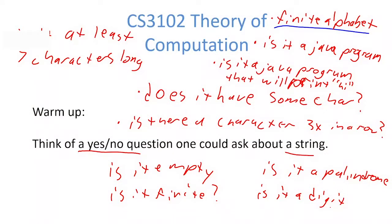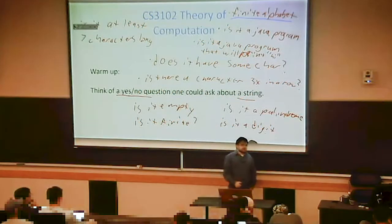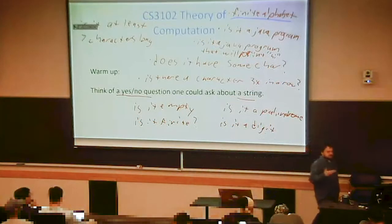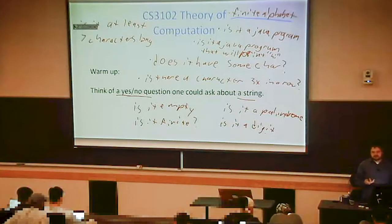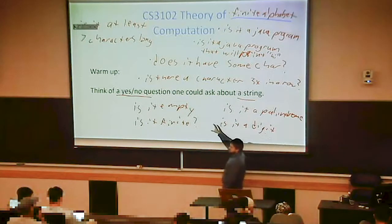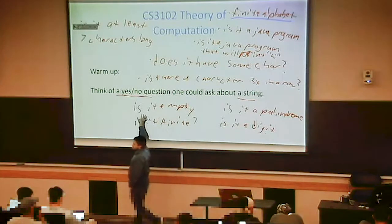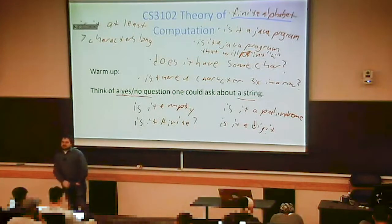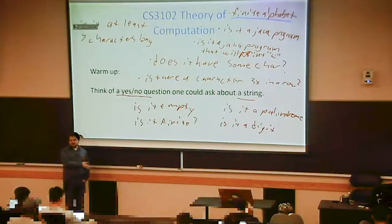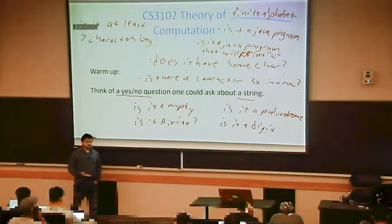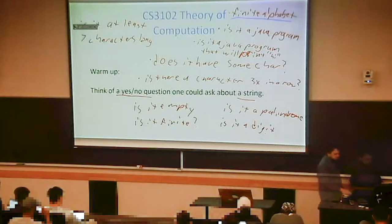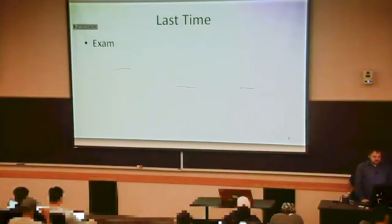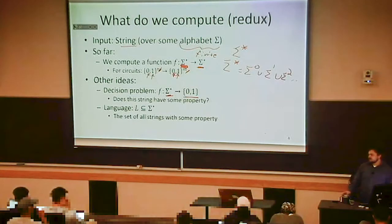All of those questions listed are decision problems, because we're asking a question about a string. We can think of each question as a function: the function accepts some string as input, and provided the answer to whatever question we asked was yes, it gives as the result true or one; whenever the answer was no, it gives zero or false. Most of the functions we've been talking about so far have secretly been decision problems all along.